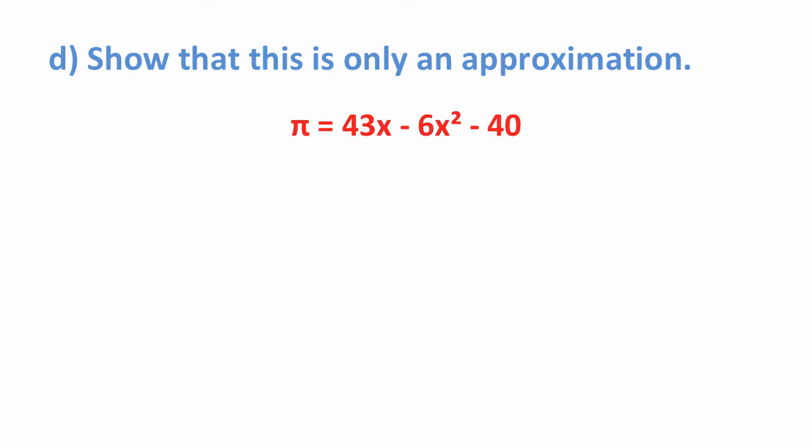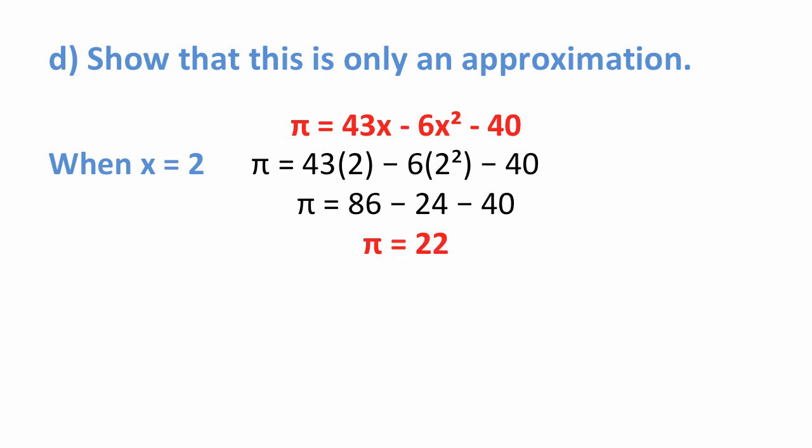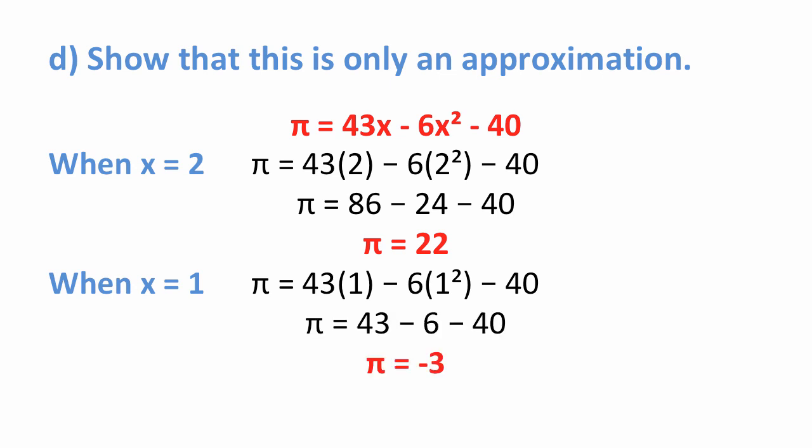What we'll do is again put in our profit function. When we have the value of 2, let's find out what our profit is. Putting 2 in for x, we get a profit of 22. When we have a level of output equal to 1, we put that in for x and solve for profit. In this case, we end up with a loss of 3.